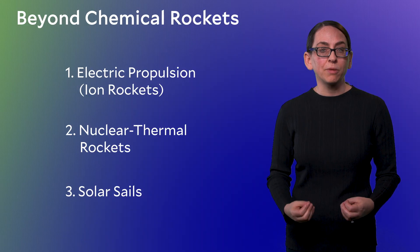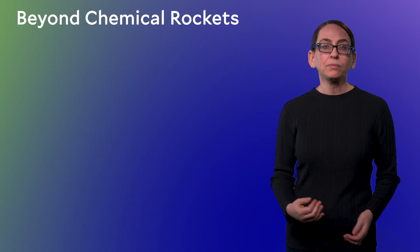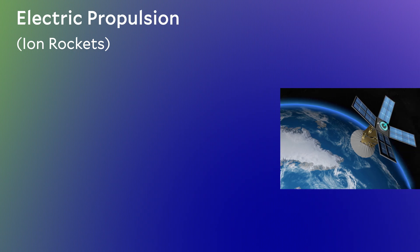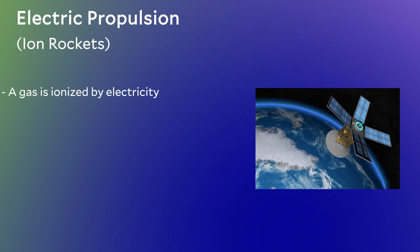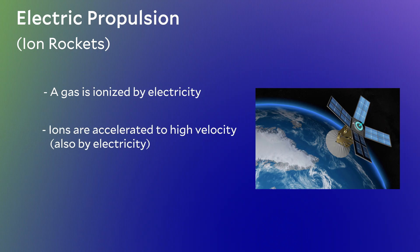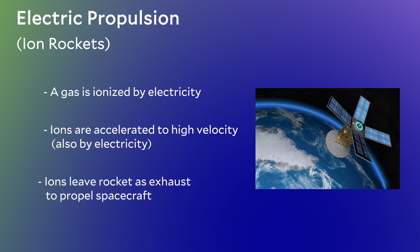Good. So let's first talk about electric propulsion. Electric propulsion, also called ion rockets, comes in a variety of forms, but the idea is the same. Electric propulsion uses electricity, the electricity generated by a satellite solar panel, to ionize a gas. The resulting ions are accelerated to a high velocity and shot out a rocket to push the satellite in some directions.